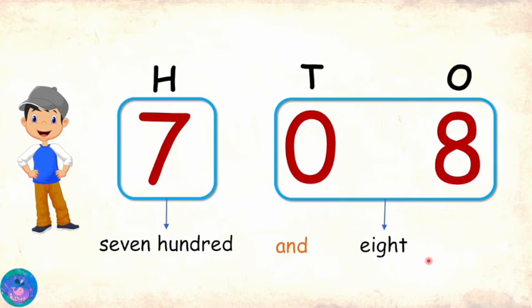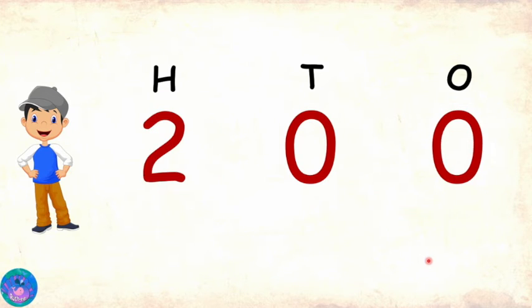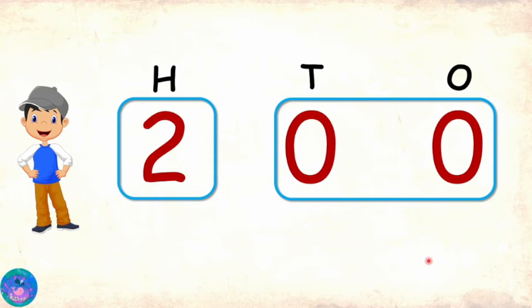And can you read this one? Okay. So two parts. 2 in hundreds place. So the first part is 200. 0 in tens place and 0 in ones place, the second part is nothing. So the number will be read as 200 and... Oh, just 200. Absolutely right. Well done, Sam.